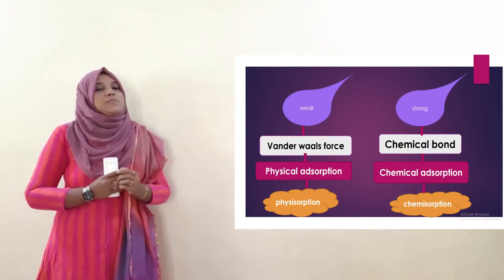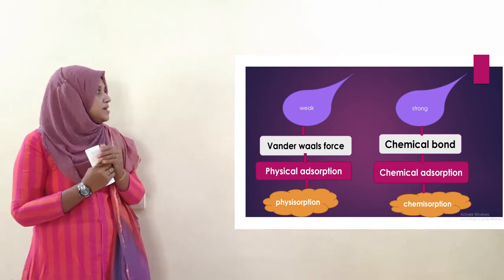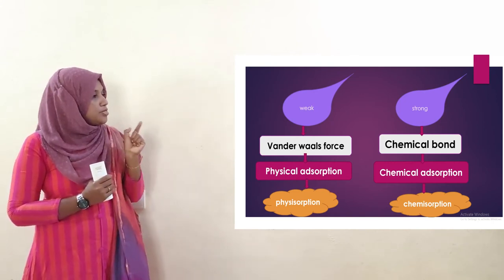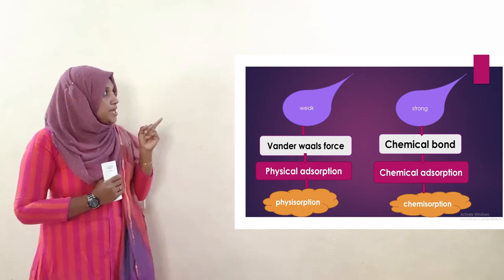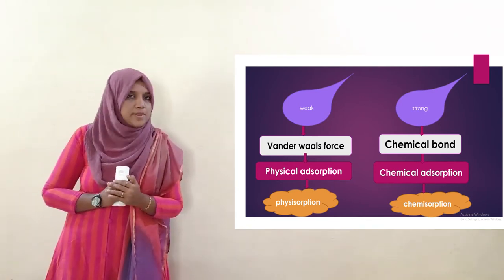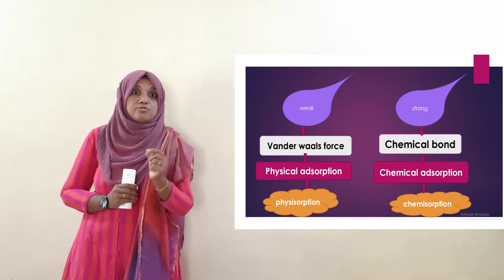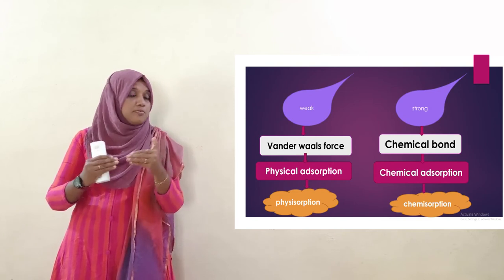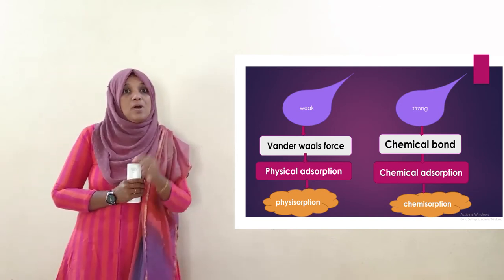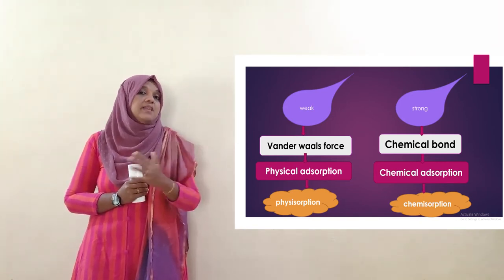In physisorption, the nature of force between adsorbate and adsorbent is weak — a weak van der Waals force of attraction between the adsorbent and adsorbate. In chemisorption, the force is strong — a strong chemical bond.